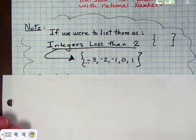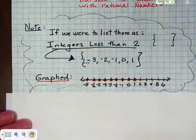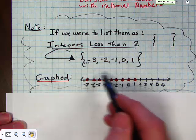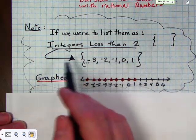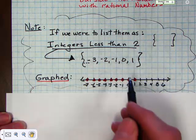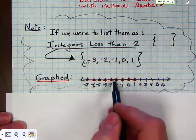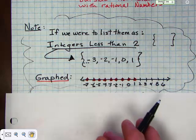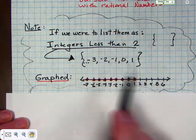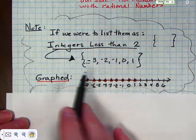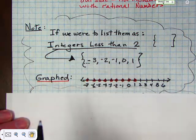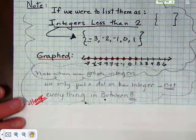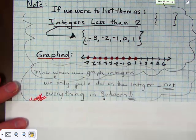If I was going to graph that, I would put it on a number line. I would have positive and negative sides with 0 in the middle. Integers less than 2 would be shown, but 2 would not be included. Notice that the dots are only on the integers themselves — you would not include anything in between, because integers are only whole numbers and their opposites. There are no fractions or decimals in between.